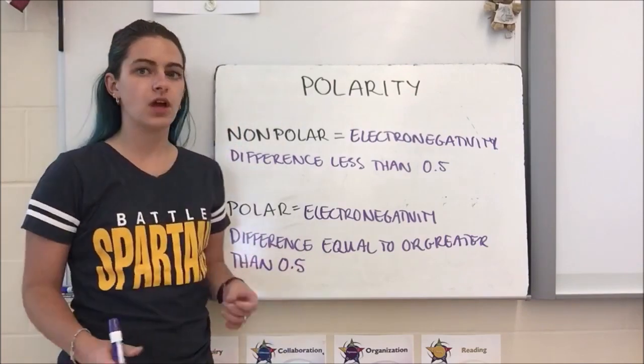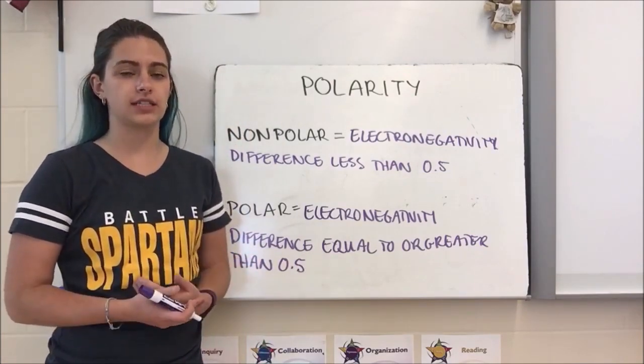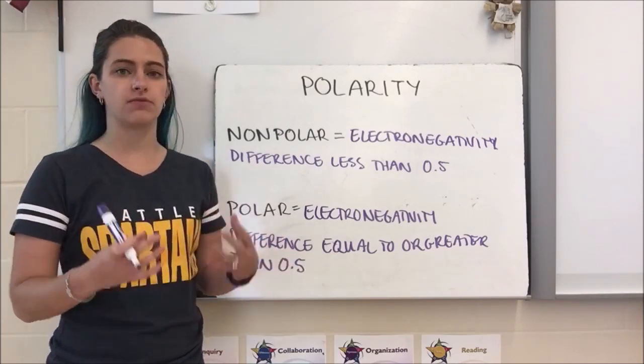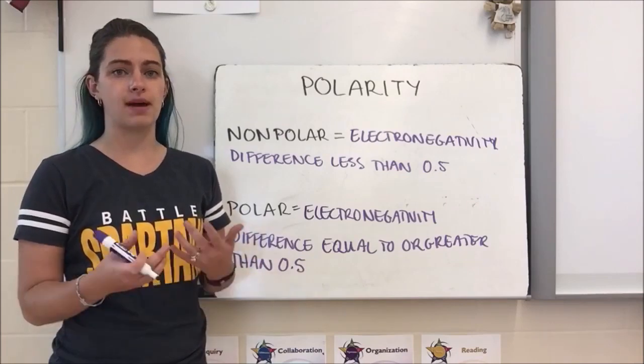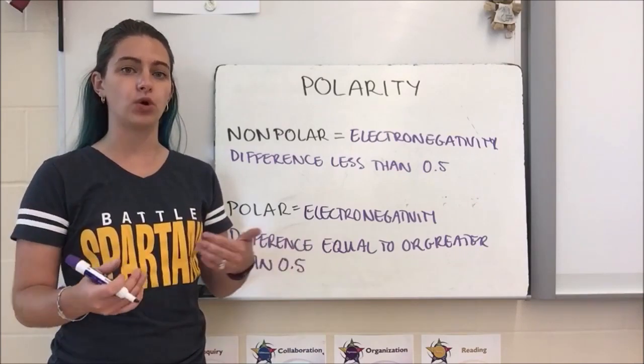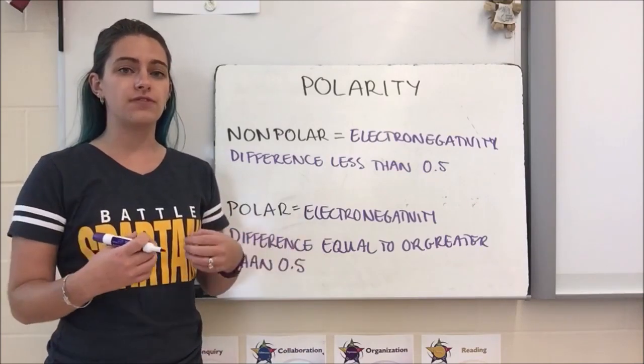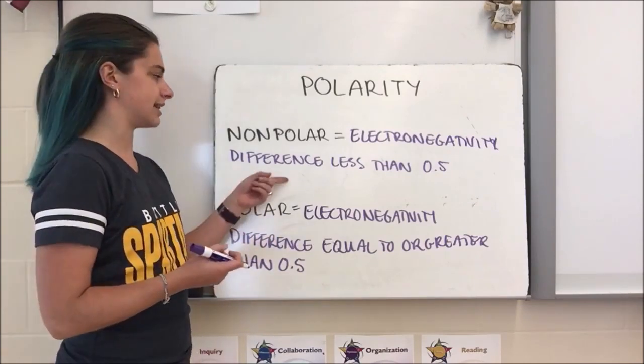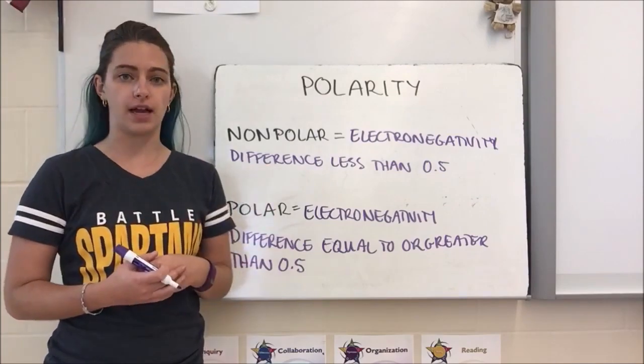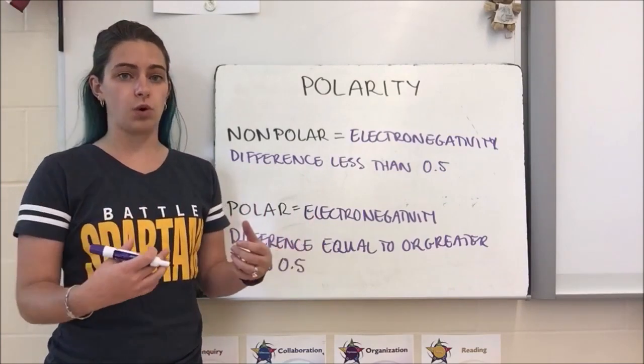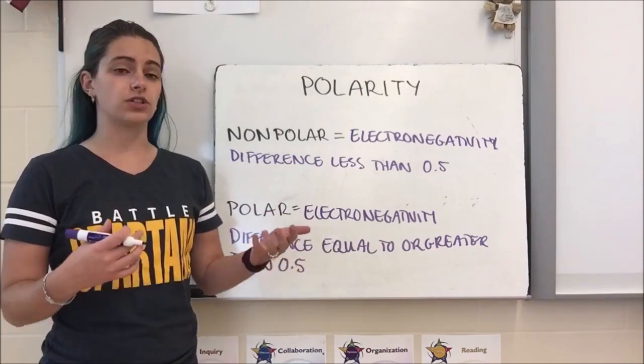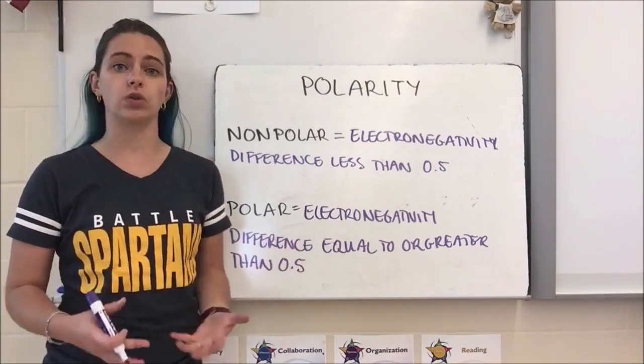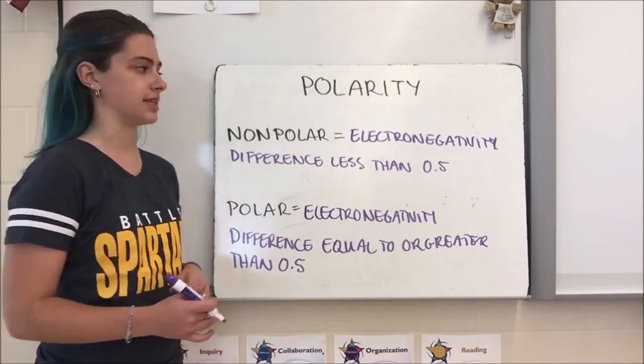What we're going to be looking at are the difference in electronegativity values for two atoms forming a bond. Remember the electronegativity is a measure of how much each atom is going to pull on those electrons. If it's an even pull, so there's a very small difference in electronegativities, that is considered a nonpolar bond. If there's an unequal pull, so one's going to pull more than the other with a greater electronegativity difference, that's when we end up with a polar bond.